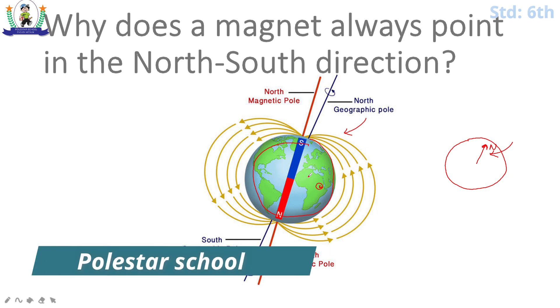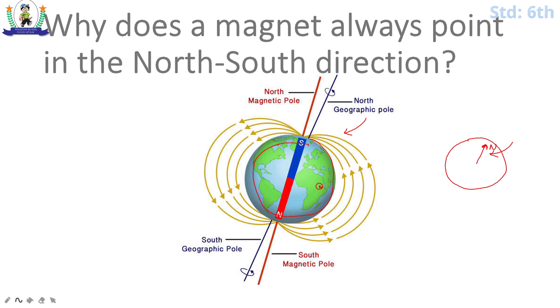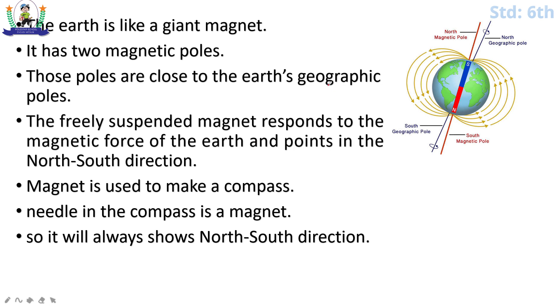So, we have covered: Earth acts as a giant magnet with two magnetic poles, north and south, which are the Earth's south magnetic pole and north magnetic pole. And these two are our geographical Earth poles. Magnet is used to make a compass. The needle in the compass is like a magnet and it will always show north and south direction.